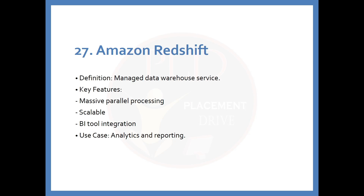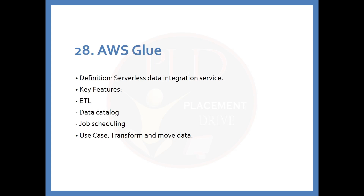The 27th service is Amazon Redshift. The definition is: a managed data warehouse service. Key features include massive parallel processing, scalability, and BI tool integration. The use case is analytics and reporting. The 28th service is AWS Glue. The definition is: a serverless data integration service. Key features include ETL, data catalog, and job scheduling. The use case is transforming and moving data.